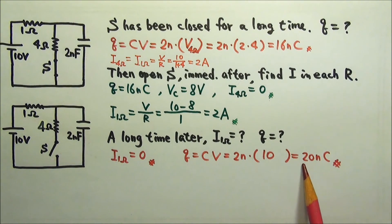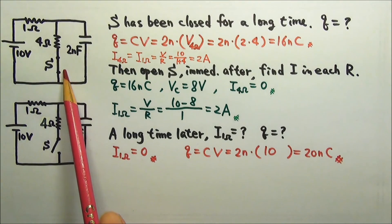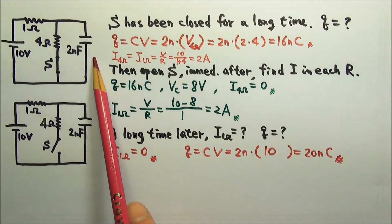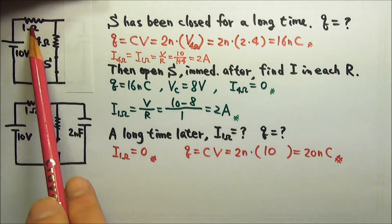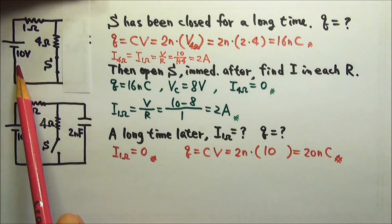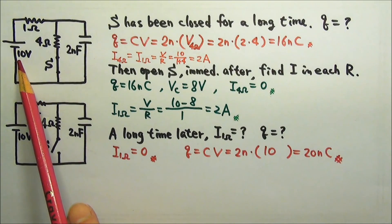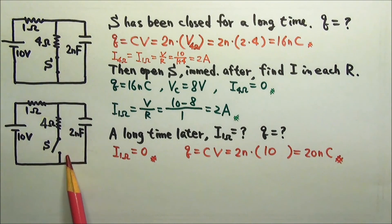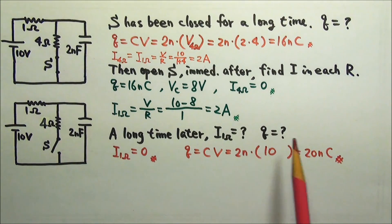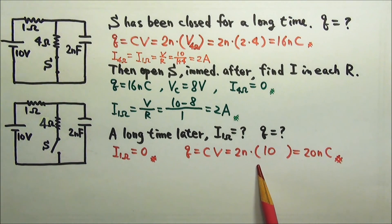That means the entire 10 volts drop happens across the capacitor, so the charge is 20 nano coulombs. Before the switch is opened, the capacitor gets the same voltage as the 4 ohm resistor. Since effectively these two resistors are in series, they share the battery's 10 volts, so the capacitor gets only part of the battery's voltage — 8 volts. After the switch is opened, the capacitor charges further and eventually gets all of the battery's 10 volts.